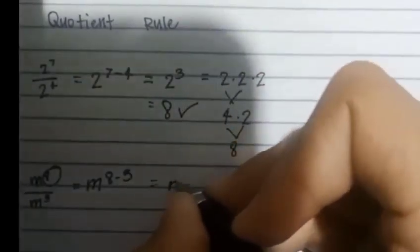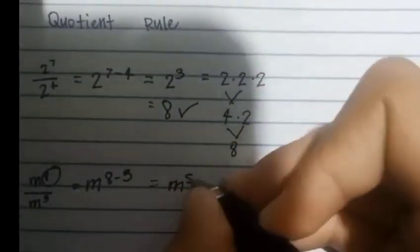Another example. M. Since M is the base, we'll copy the M. So M to the 8 minus 3 equals M to the 5.